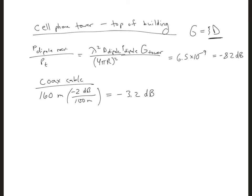And then lastly, for the inside link, we can again use the Friis transmission formula. So P received over Pt is equal to lambda squared over 4 pi r squared.